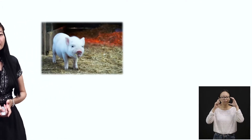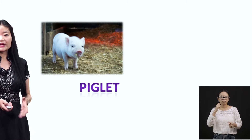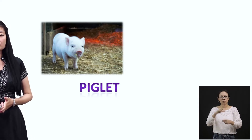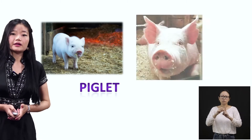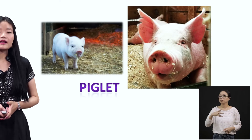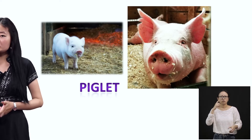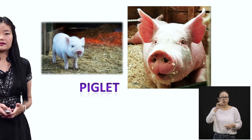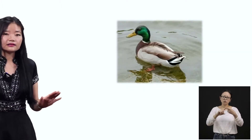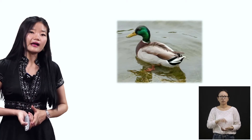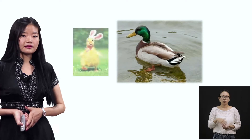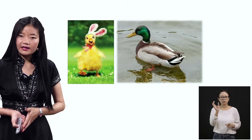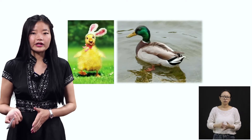Next question. This is a piglet — everybody knows this animal. This is a baby piglet. So how do we call the mother of a piglet? The mother of a piglet is a pig — P-I-G. The baby of a pig is a piglet, and the mother is a pig. Now here, this is a duck, and the name for a baby duck is duckling — D-U-C-K-L-I-N-G, duckling.